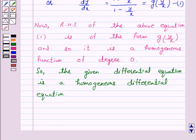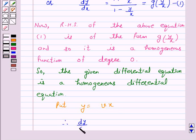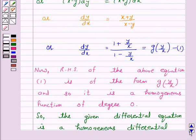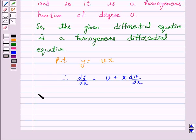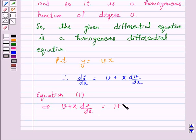We will solve this homogeneous differential equation by putting y equal to vx. On differentiating both sides with respect to x, we have dy by dx is equal to v plus x into dv over dx. On substituting the value of y and dy by dx in equation 1 we have: v plus x into dv over dx is equal to 1 plus v over 1 minus v.